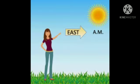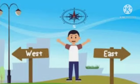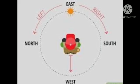The sun rises in the East direction. East is opposite to West direction. The sun sets in the West direction. While facing towards the sun, keep both your hands straight. Your left hand side is North and your right hand side is South, which is opposite to North.